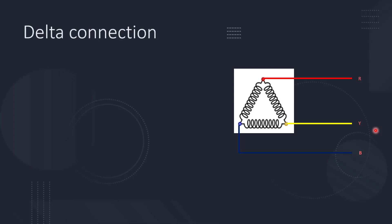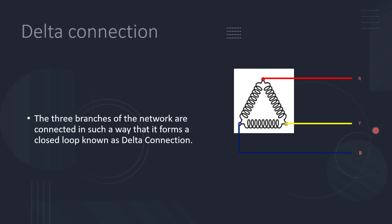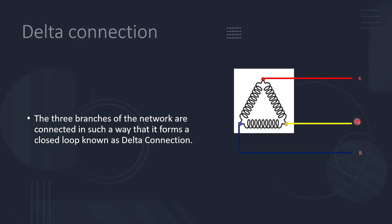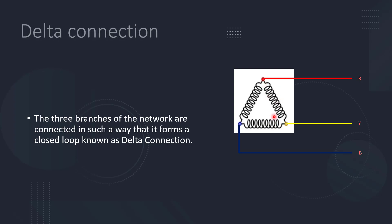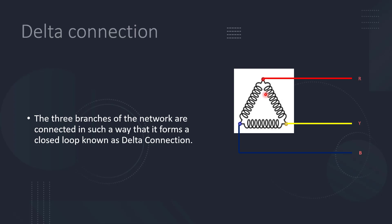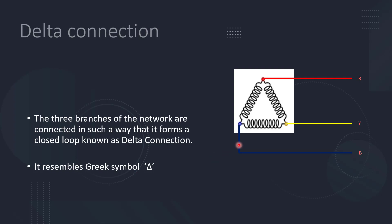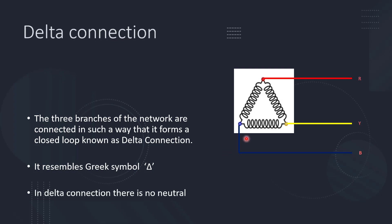The other type of connection is delta connection. In delta connection, three branches of a network are connected in such a way that it forms a closed loop. You can see in the picture: three branches, three phases or three windings, are connected in the form of a loop. This type of connection is called delta connection. It resembles the Greek symbol delta — that is the reason behind the name.